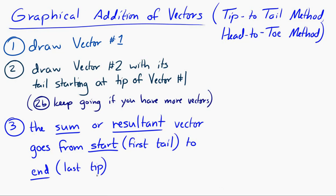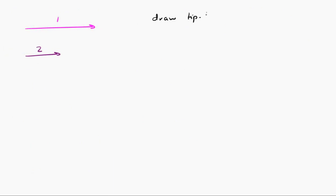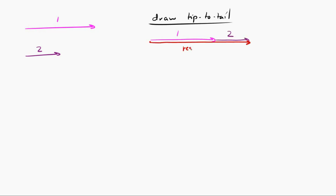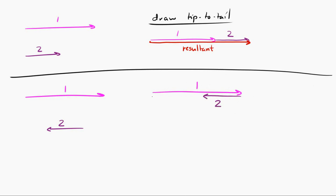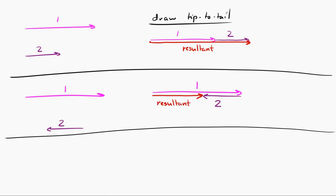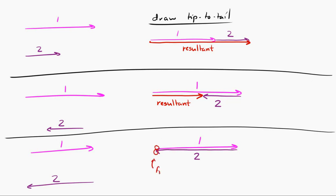Let's try this out with two one-dimensional vectors. Let's say I have vector one and vector two. I draw them tail-to-tip, and the sum goes from the first tail to the last tip. Now let's try two vectors that are in opposite directions — a big vector to the right and a small vector to the left. If I draw them tip-to-tail, the resultant vector goes from the first tail to the last tip. And if I have two vectors that are the same size and draw them tip-to-tail, the first tail and last tip are in the same place, so the resultant vector is zero — they add up to zero.